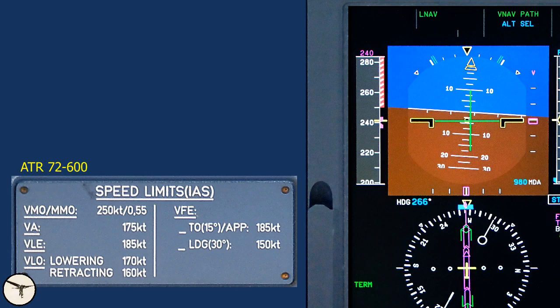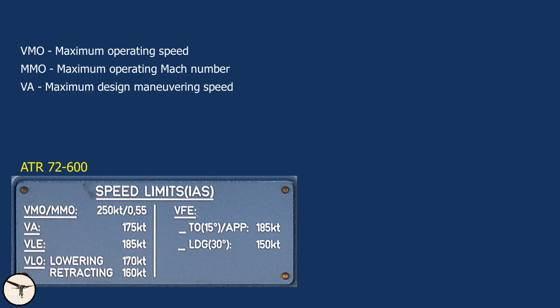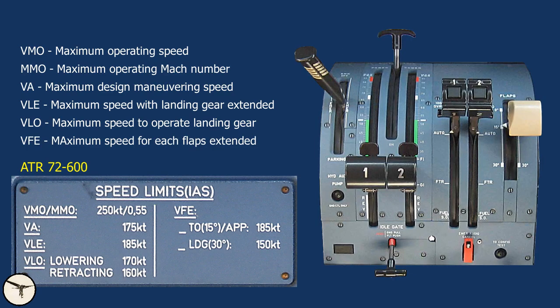Here is a placard showing some important speed limitations. VMO is maximum indicated airspeed, marked on the airspeed indicator with a red and white band called the barber pole. MMO is maximum Mach number, a limitation at high altitudes — ATR doesn't have a Mach indicator, but the barber pole will move and reduce VMO. VA is maximum maneuvering speed, the maximum speed where you can apply maximum deflection of the flight controls. VLE is maximum speed with the landing gear extended. VLO is maximum speed when the landing gear is operating, meaning lowering or retracting. VFE is maximum speed with flaps extended.